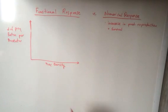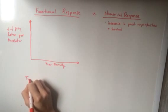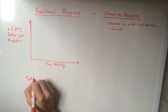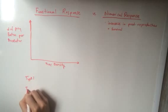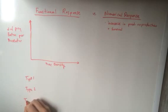And so, this graphical representation has three types of functional responses. That is classified as type 1, type 2, and type 3 functional responses.